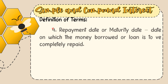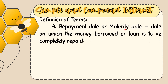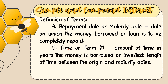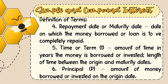The fourth term is the repayment date or maturity date — the date on which the money borrowed or loan is to be completely repaid. The fifth is time, or term, symbolized as t — the amount of time in years the money is borrowed or invested, measured as the length of time between the origin and maturity dates. The sixth is the principal, symbolized as P — the amount of money borrowed or invested on the origin date.